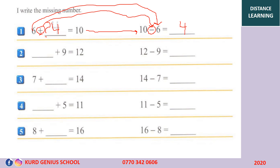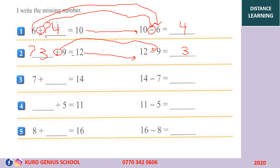Number 2: what number plus 9 equals 12? This is also a missing number. We write 12, then change the plus sign to minus, then write 9. So 12 minus 9 equals 3. 12 minus 9 equals 3. We find the missing number: 3 plus 9 equals 12.